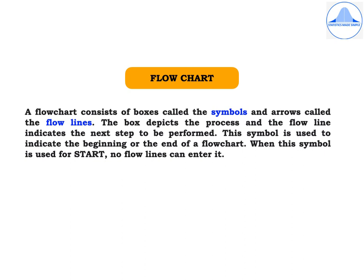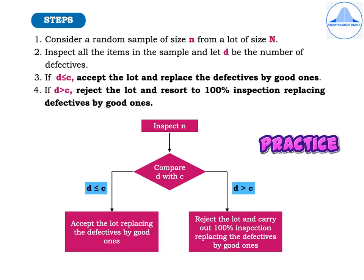Before explaining the steps, let me give a small explanation about a flowchart. A flowchart consists of boxes called symbols and arrows called flow lines. The box depicts the process and a flow line indicates the next step to be performed. The oval or rounded symbol is used to indicate the beginning or end of a flowchart. When this symbol is used for start, no flow lines can enter it. Now, what are the steps involved in a single sampling plan?